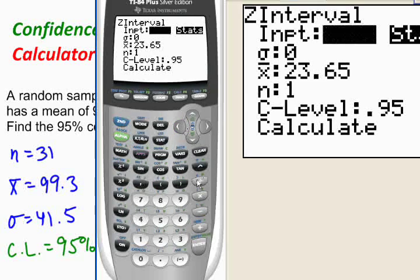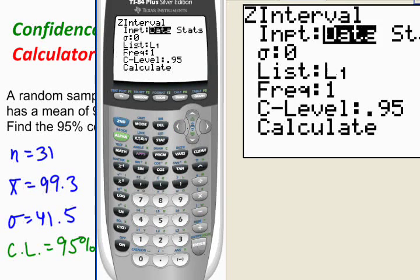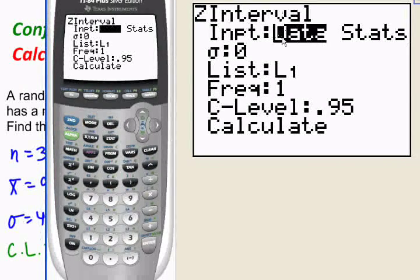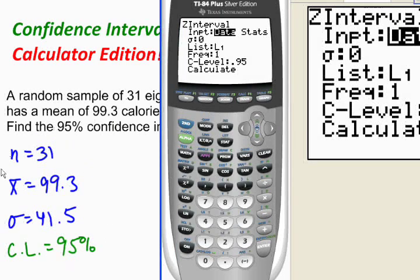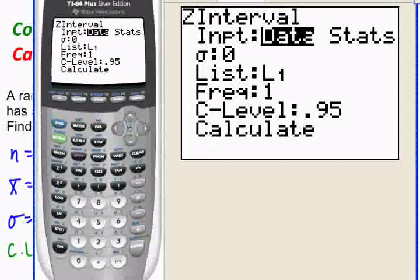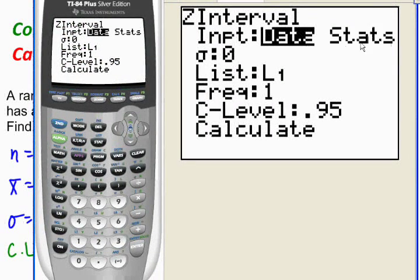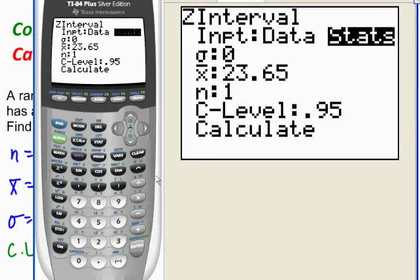The first thing that's highlighted or could be highlighted is data. Well, I don't have the raw data. What I have are statistics. This over here is not the raw data. I just have the summary statistics. So I want to go over on my menu and highlight stats and hit enter, and then fill in all of the appropriate statistics.